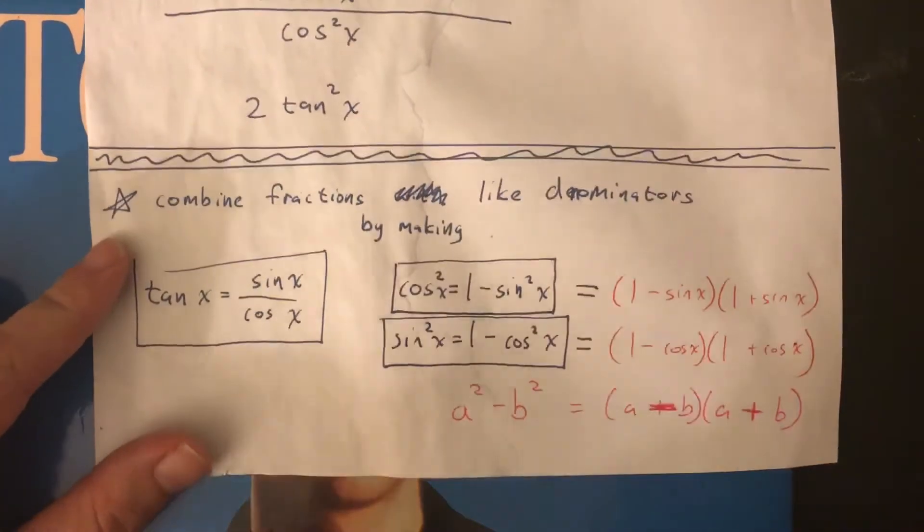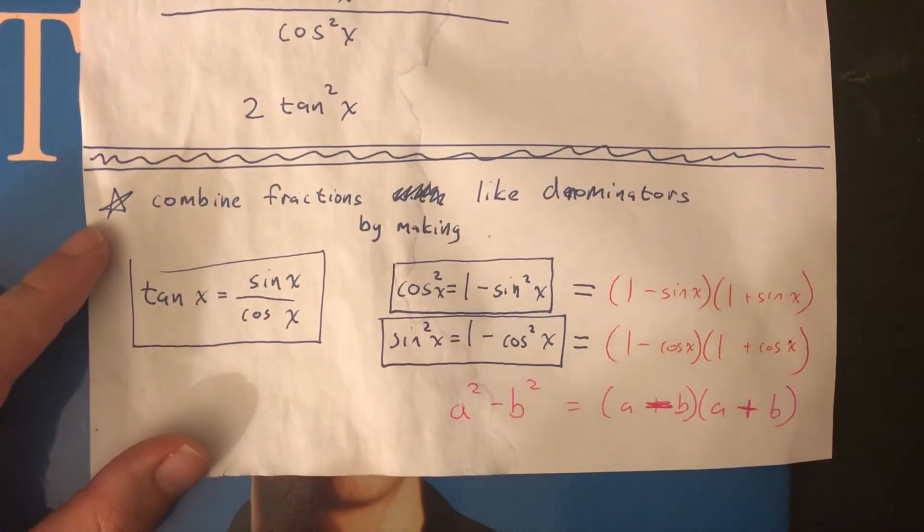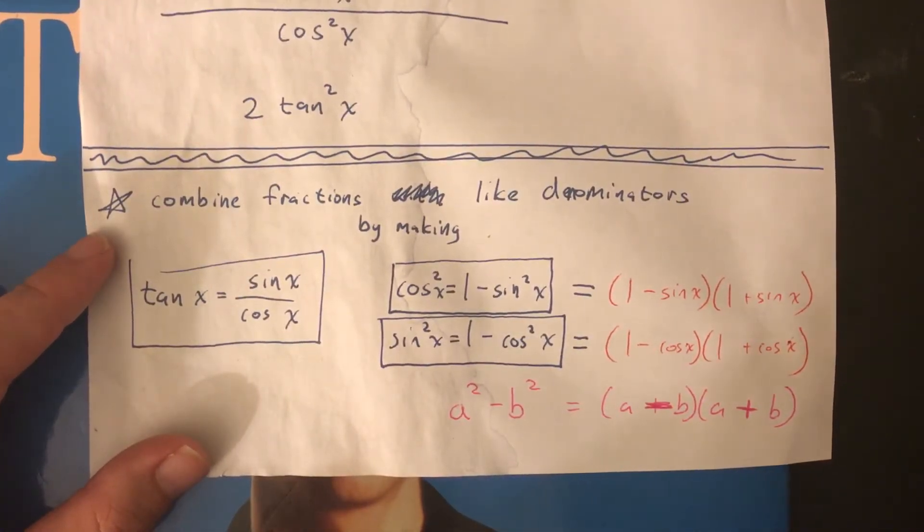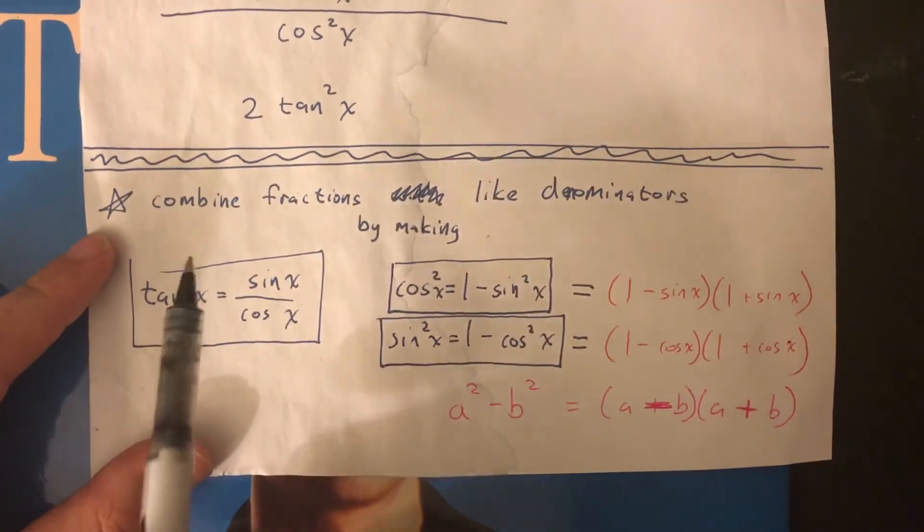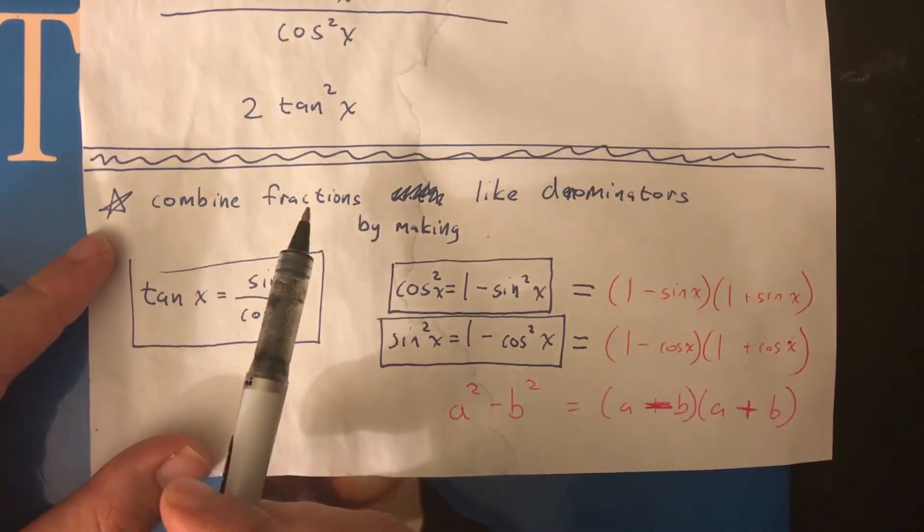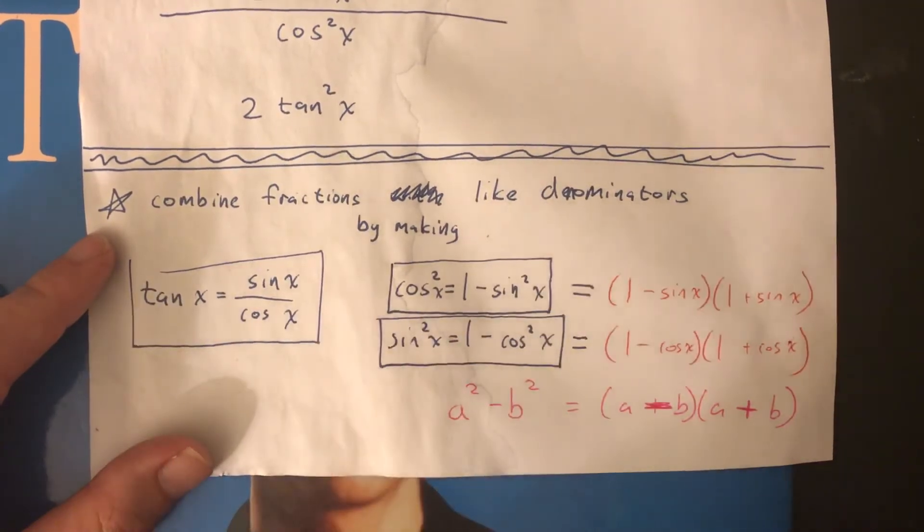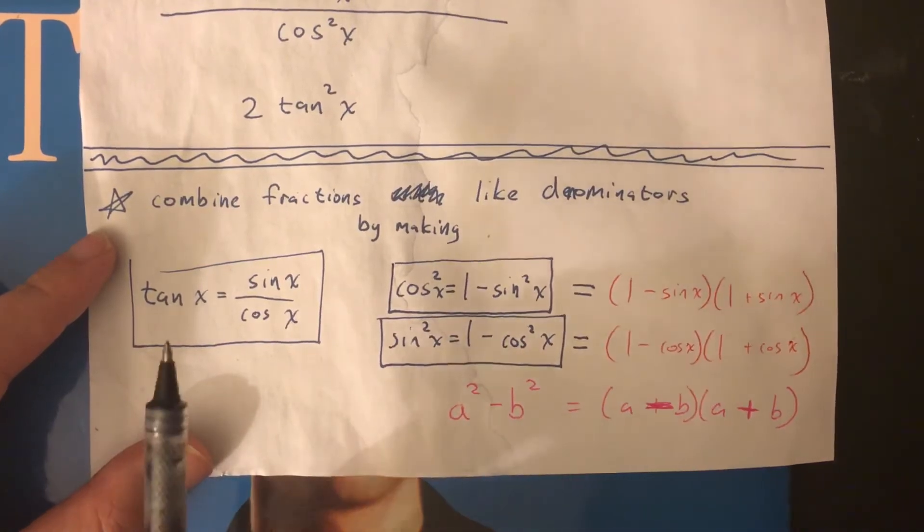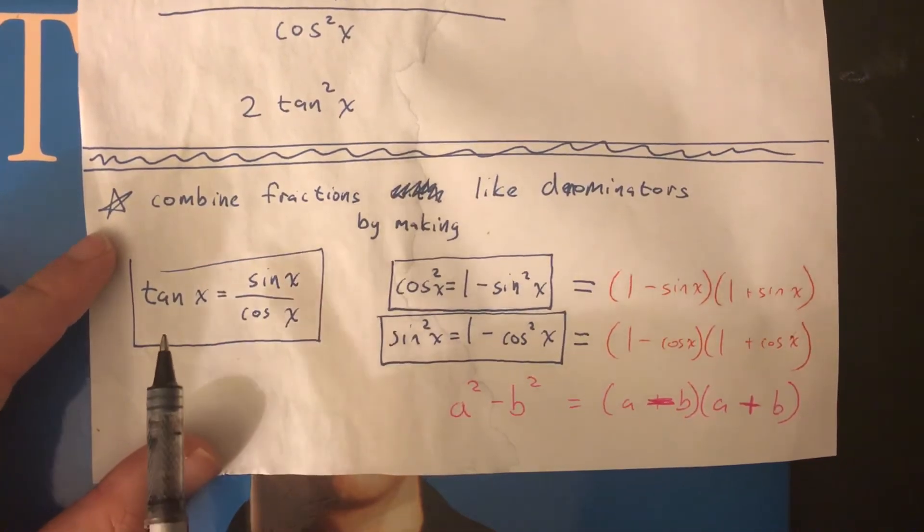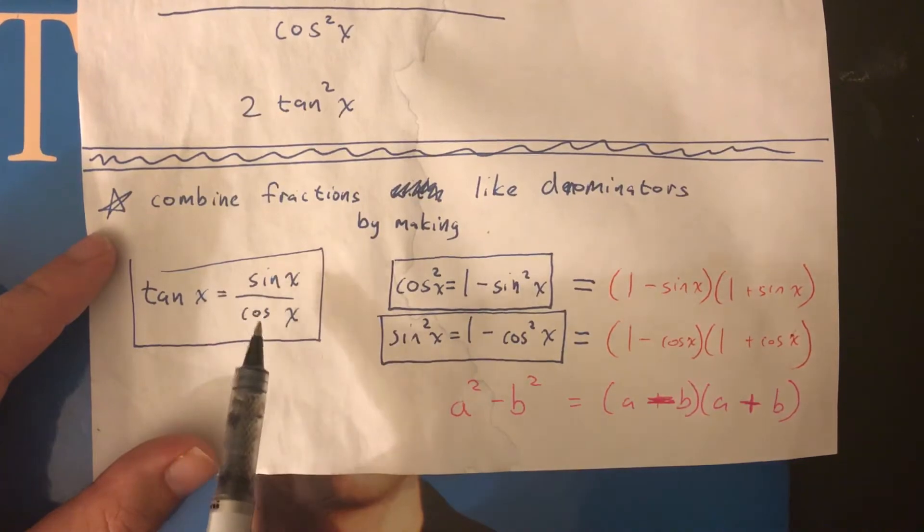Let's talk about your tools, your weapons when you do these trig proofs. One big idea is that we often combine fractions by just making like denominators, because that's how you add or subtract fractions. I see that on a lot of these. The other big ideas are our trig identities. Tan equals sine over cos.